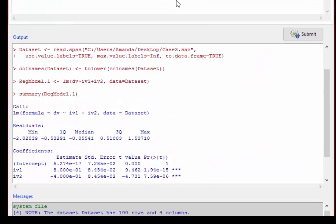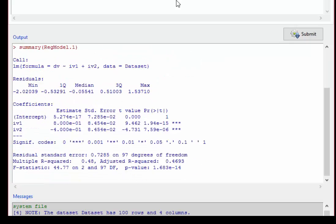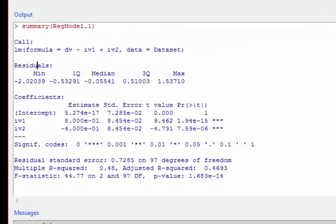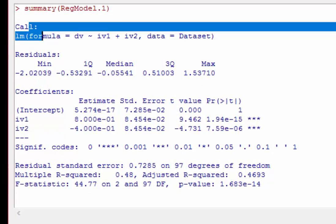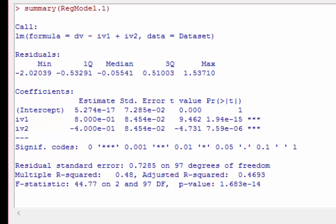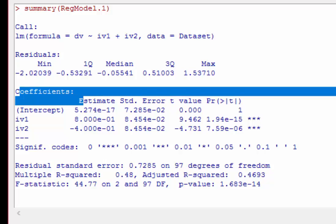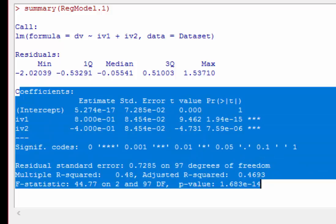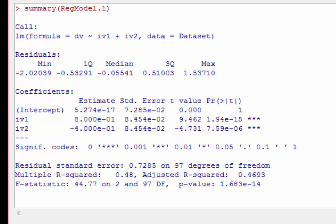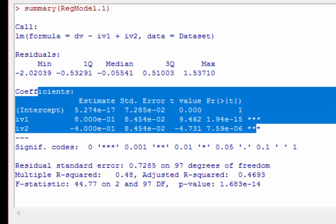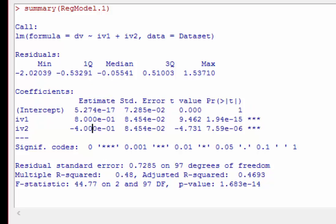So what we've got first is of course this is just the code. You've got some residuals that you can ignore. Going all the way down you've got coefficients, so this is where you really start to get your important output. It gives you your coefficients. These are where you'll find your beta weights.